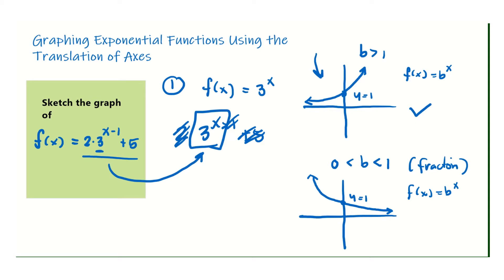Depending on the coefficient, like the times 2, the intercept equals 1 only for exactly b to the x. This intercept will change because of factors like the 2, which I'll discuss later. What I'm pointing out is that you need to know the parent function, which is 3 to the x, with a base bigger than 1. So the graph of the function we need to graph should behave in a similar manner — going up from left to right.